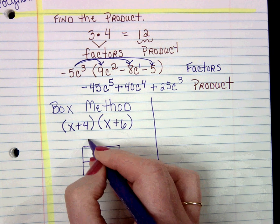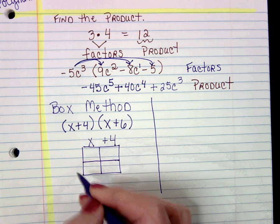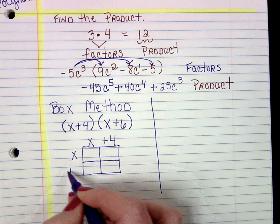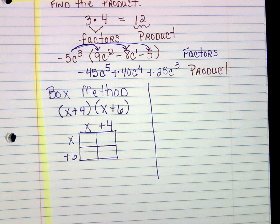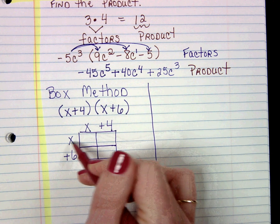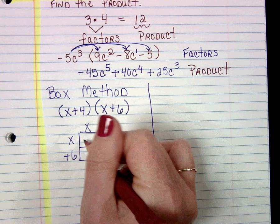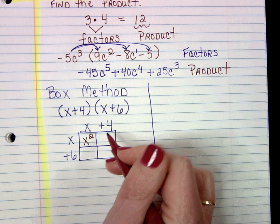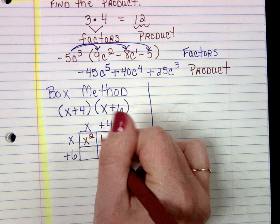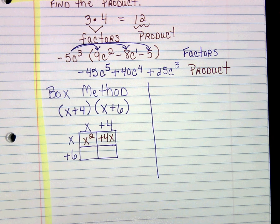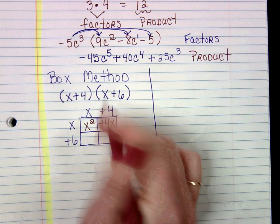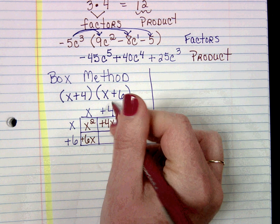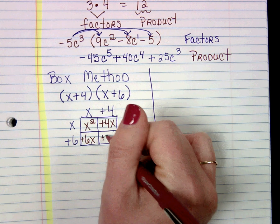I'm going to write one of the factors across the top, and I'm going to write the other factor down the side. It's kind of like a multiplication grid. Now what I'm going to do is fill in my box. x times x would be x squared. 4 times x would be positive 4x. I'm just stressing the signs because it's going to be helpful. x times positive 6, positive 6x. x times 6, positive 24.